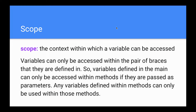Scope is the context within which a variable can be accessed. Variables can only be accessed within the pair of braces that they are defined in. Variables defined in the main can only be accessed within other methods if they are passed as parameters, and any variables defined within methods can only be accessed within those methods. This explains why we need parameters for methods outside of main — so those methods can get access to information from main.